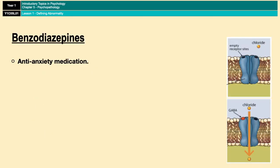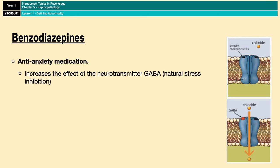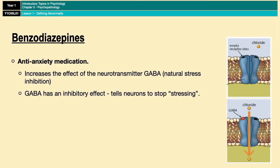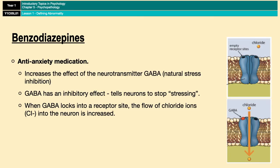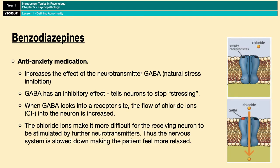Benzodiazepines are an anti-anxiety medication. One of the main emotional characteristics of OCD is anxiety brought about by both obsessions and compulsions. Benzodiazepines work by increasing the effect of a neurotransmitter called GABA — the body's built-in stress inhibitor. It's a neurotransmitter that has an inhibitory effect on neurons, which essentially means it makes them more negatively charged and less likely to fire. GABA works by reacting with receptor sites on the outside of receiving neurons. When GABA locks into these receptor sites, it opens a channel that increases the flow of chloride ions into the neuron. Chloride ions are negatively charged, and consequently the neuron becomes more negatively charged, which makes it harder for the neuron to be stimulated by other neurotransmitters, therefore slowing down its activity and making the person feel more relaxed overall.